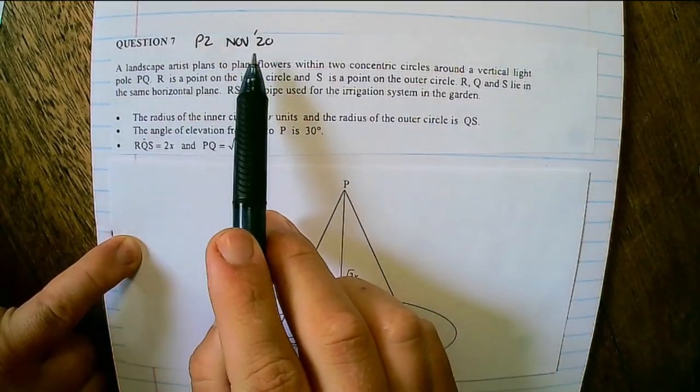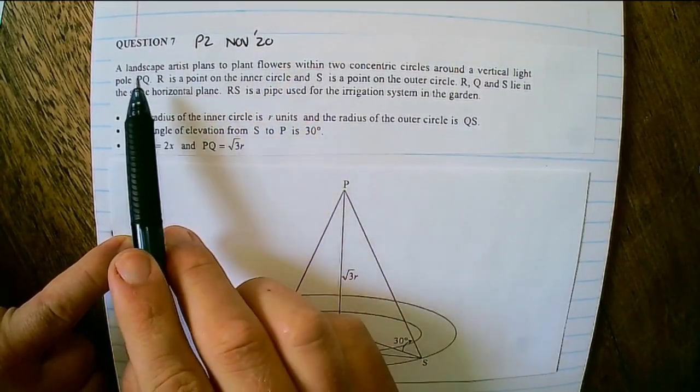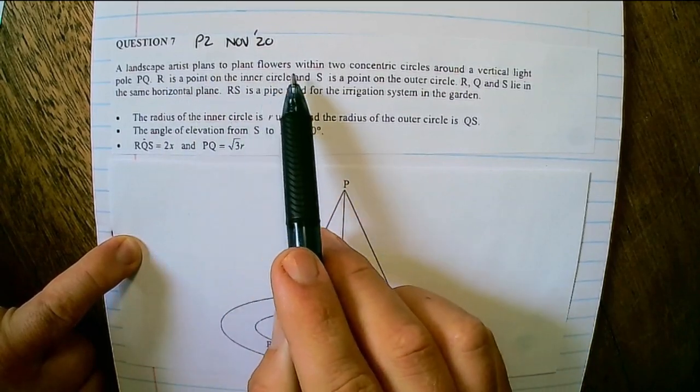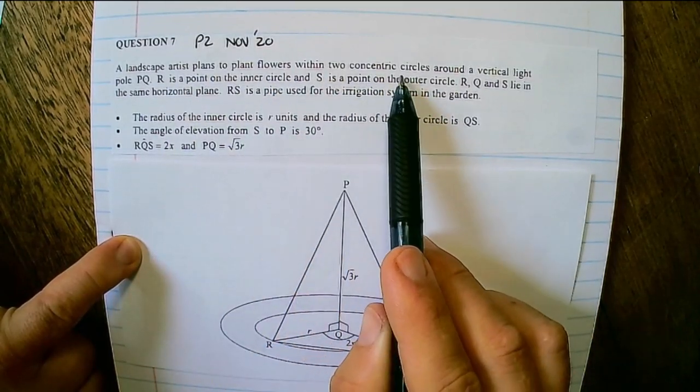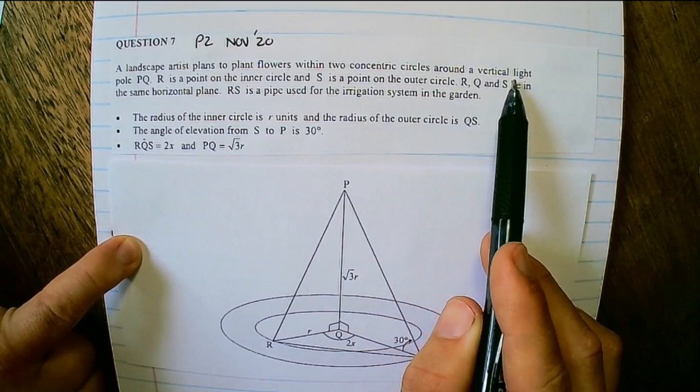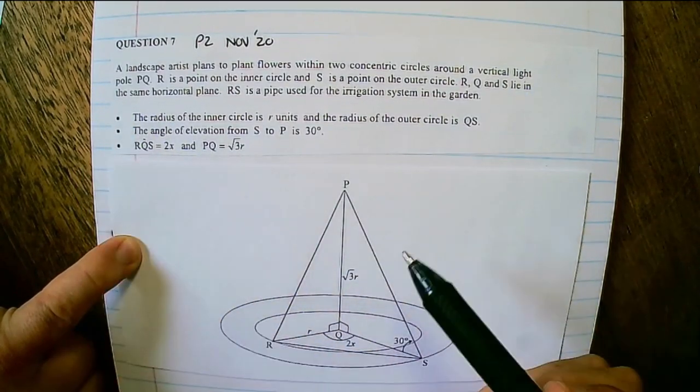Question 7, paper 2, November 2020. A landscape artist plans to plant flowers within two concentric circles around a vertical light pole, PQ.